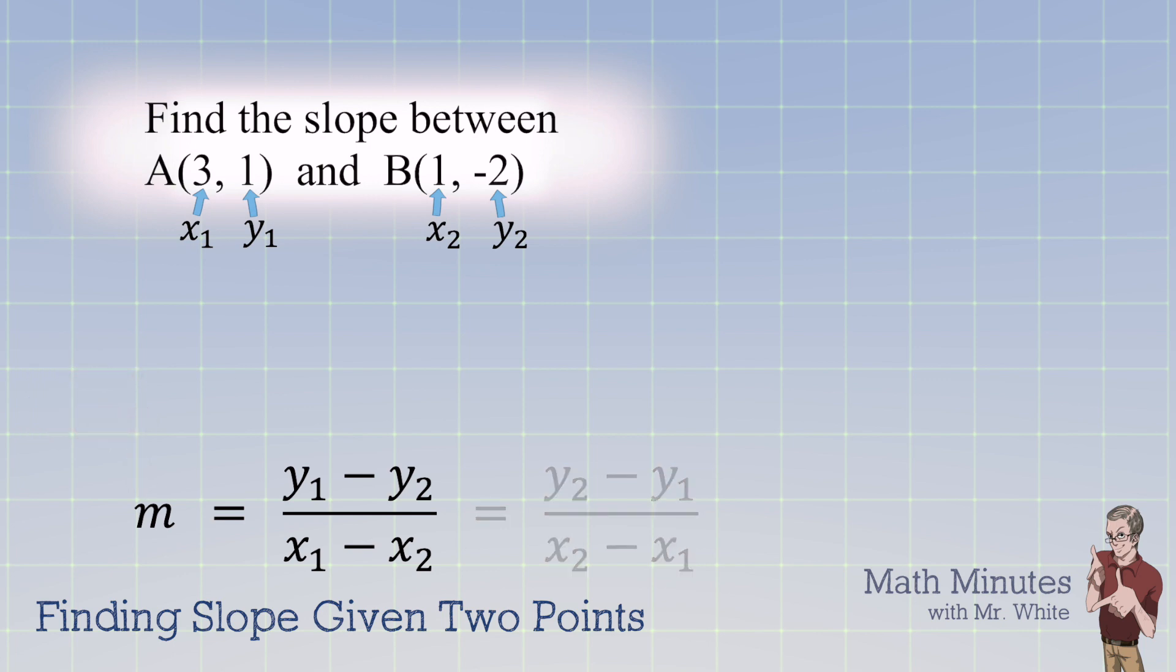So in this particular problem, we're going to take our y1, and we're going to subtract our y2. That's going to be on the top of our fraction. And at the bottom, in order to find the run, we're going to subtract the x-coordinate. So I'm going to take that x1 minus the x2.